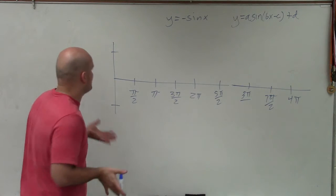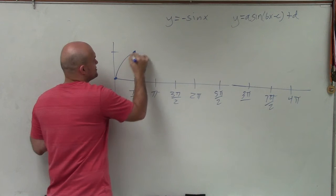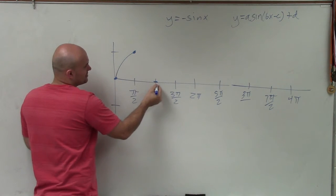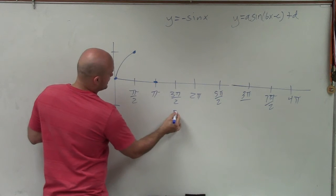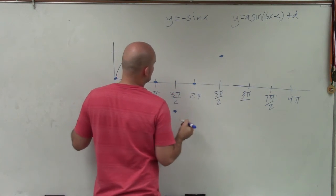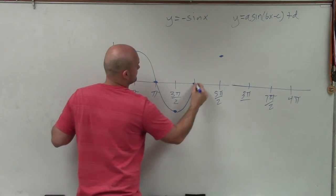Remember that the parent graph of sine starts, crosses at the origin, goes up to its maximum. A lot of students always forget that. They confuse it with tangent. Goes up to its maximum, down to its intercept, down to its minimum, back to intercept, back up to maximum to complete the period.